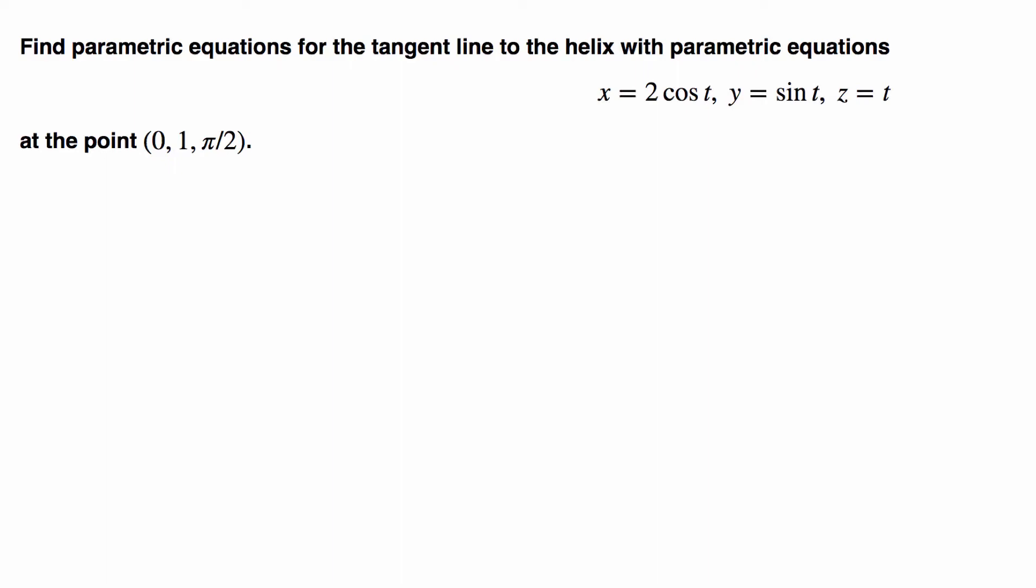Find parametric equations for the tangent line to the helix with parametric equations at the point (0, 1, π/2). So we have the point. To find the parametric equations we need a direction vector. It involves tangent, so that means we need to find the derivative.